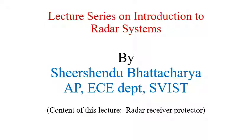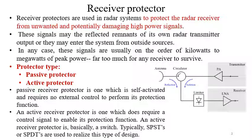In this lecture series on introduction to radar systems, we are going to discuss radar receiver protectors. Receiver protectors are used in radar systems to protect the radar receiver from unwanted and potentially damaging high power signals — mainly the signal coming from the transmitter, because the transmitter transmits a huge amount of power and receivers are very sensitive. For monostatic radars, if some power leaks into the receiver path, there is a chance of damage to the receiver.